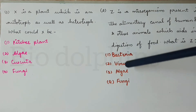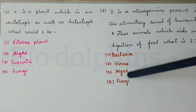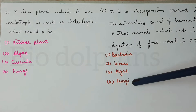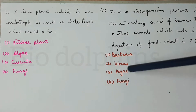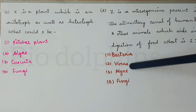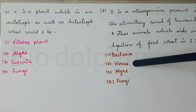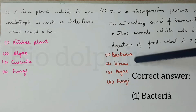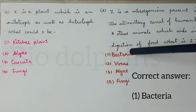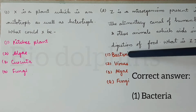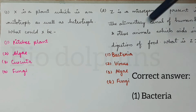We have options: bacteria, virus, algae, and fungi. Fungi and algae are not typically found aiding digestion in this way, and virus does not aid digestion. The correct microorganism here is bacteria — especially E. coli bacteria, which is present in our body and aids in digestion.